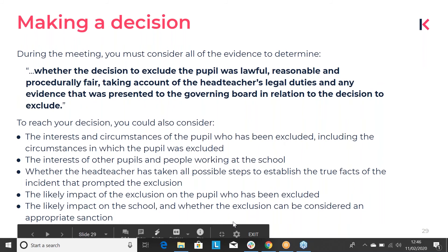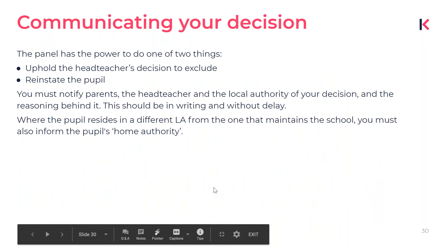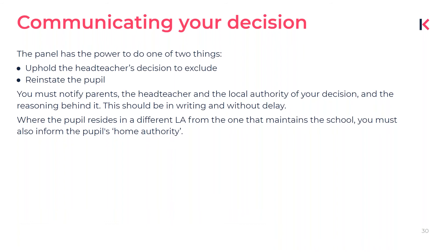When making the decision, the key question is whether the exclusion is lawful, rational, reasonable, fair, and proportionate. Once you've come to your decision, you must notify the parent, the headteacher, and the LA — both of the school and where the pupil resides if they live in a different local authority. This notification should be done in writing and without delay.